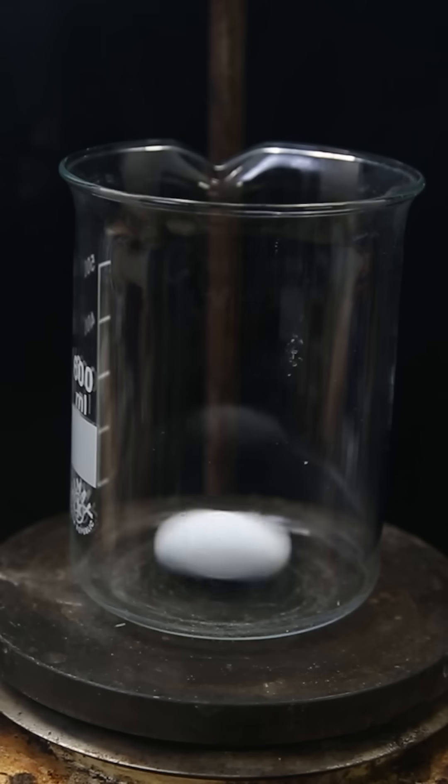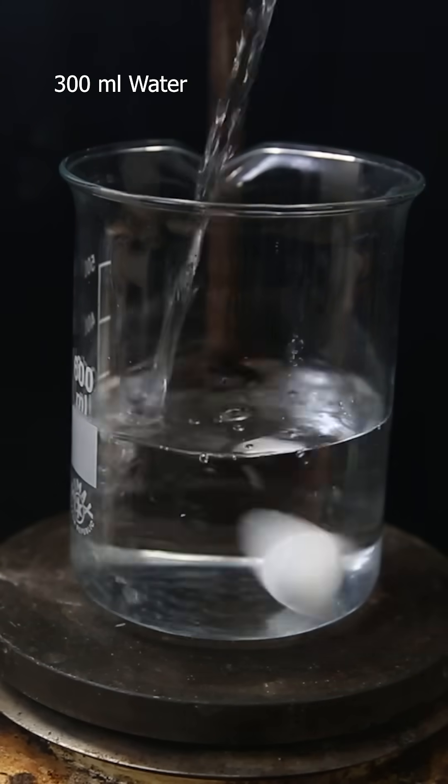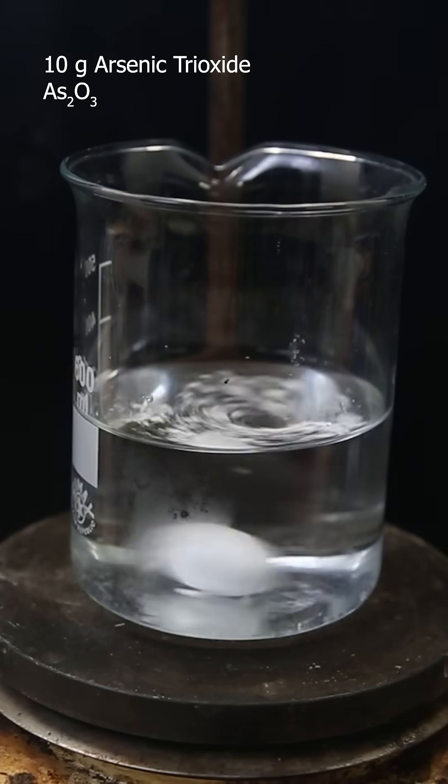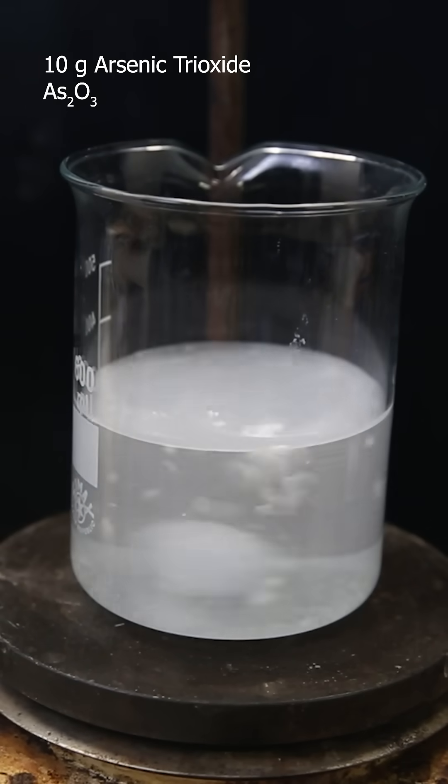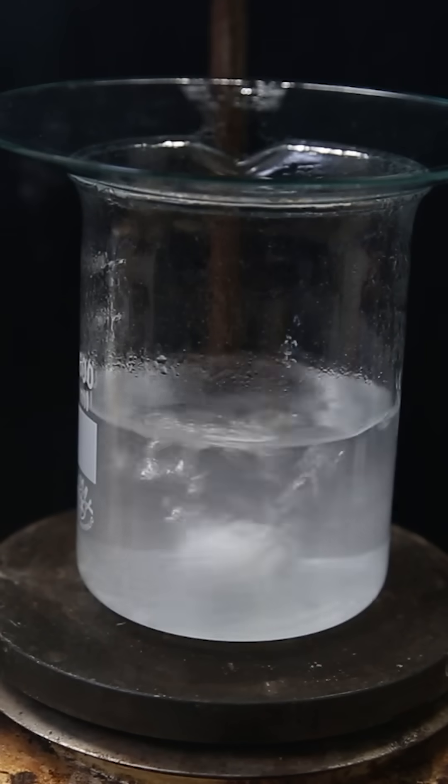First, I set up a beaker with a stir bar and add in 300 ml of water. I start heating it to a boil and then add in 10 grams of arsenic trioxide. After boiling it for more than an hour, it has dissolved.